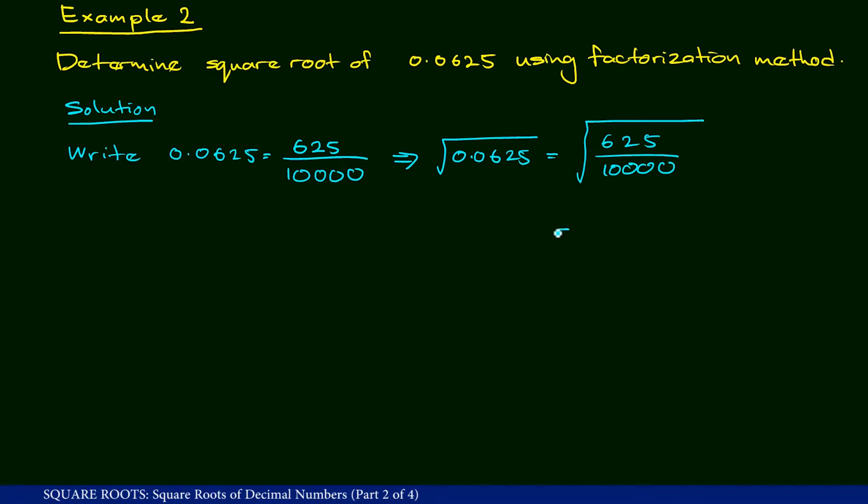And this in return is equal to square root of 625 over square root of 10,000.